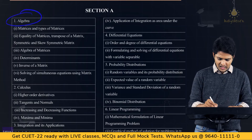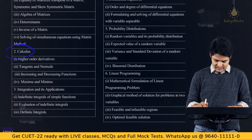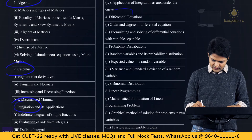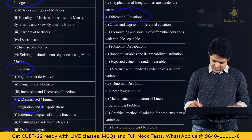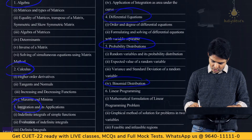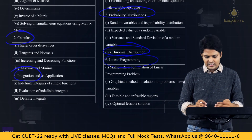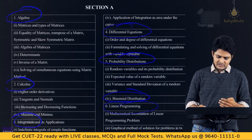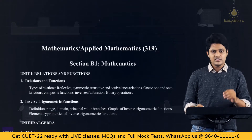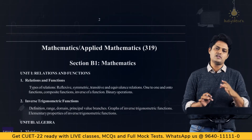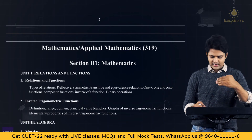The headline topics for Section A include: algebra, calculus, integration, differential equations, probability distributions, binomial distribution, and linear programming. These are all the different topics that are part of Section A, which is mandatory for every student with 15 compulsory questions.